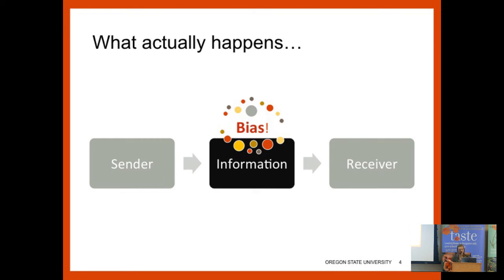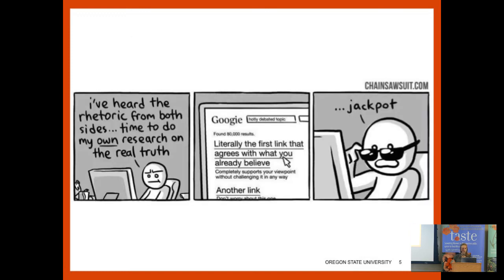But educators know that just isn't what works. What happens when we try to use this model is we've got a sender of information and receiver of information, and what happens to that information is it gets filtered through many layers of bias. The information being sent is heard in a very different way than it was meant to be received. The problem we call this is confirmation bias — a tendency to interpret or seek out information that already confirms what we believe. Like this guy: 'I've heard the rhetoric from both sides, I'm going to do my own research' — and literally the first thing that says what he thinks: jackpot.